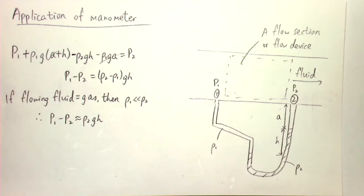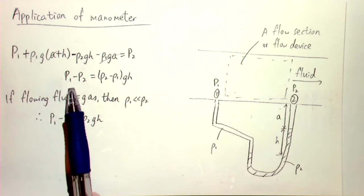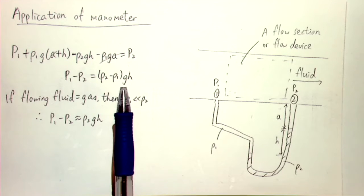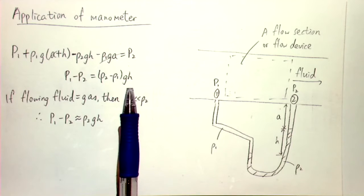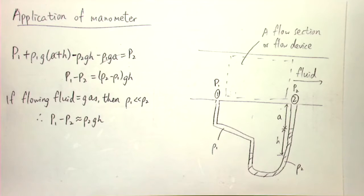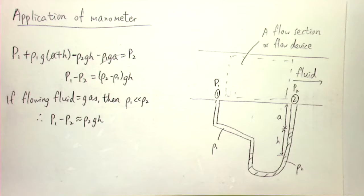We measure the pressure difference using a manometer by measuring the height difference h, since the pressure difference equals the density difference times g times h. One important reminder: the fluids must not be miscible with each other — for example, oxygen and nitrogen are miscible and would not maintain a clear boundary. Also, the manometer fluid must be denser than the flowing fluid; otherwise the manometer fluid would float up into the duct.